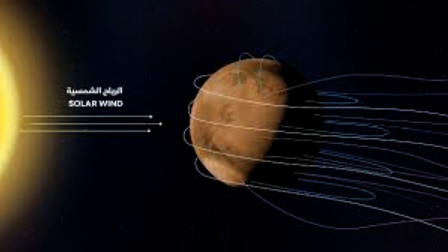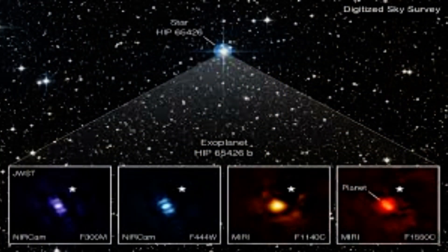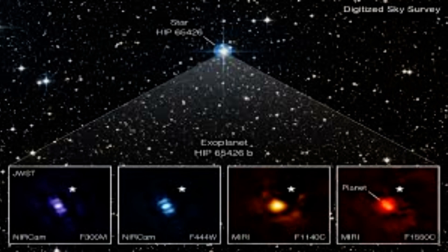The spectral signatures, including deep valleys known as absorption features, of water, carbon dioxide, and carbon monoxide are easily detected with Webb.